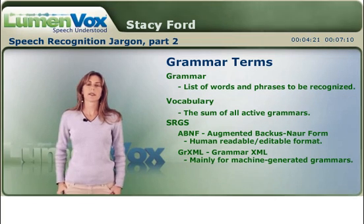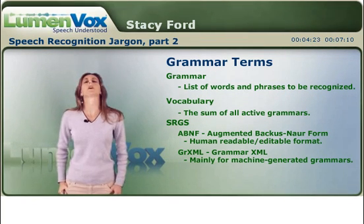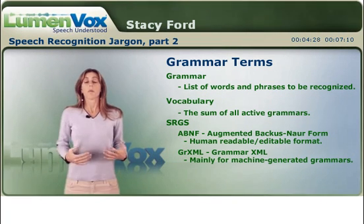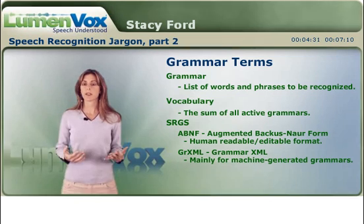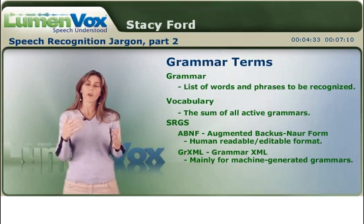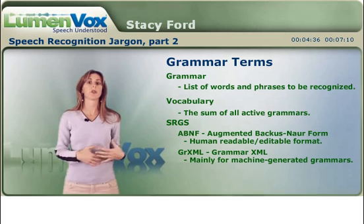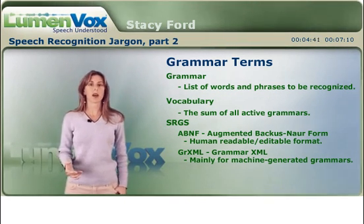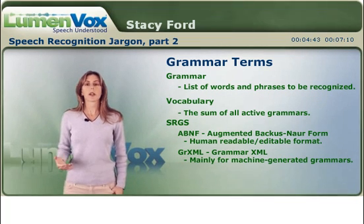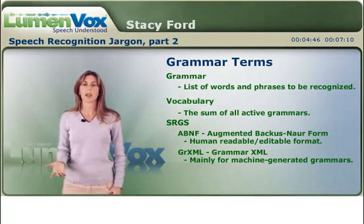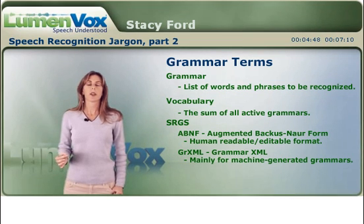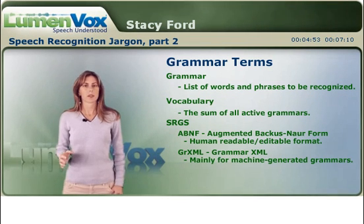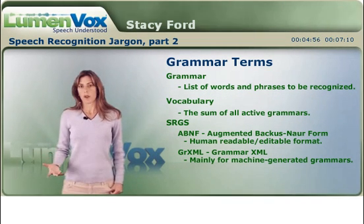ABNF stands for Augmented Backus-Naur Form. This is most commonly used when a grammar is written by a person. It's very easy to read and pretty easy to write, so if you need to edit the grammar it can be picked up relatively easily. The other format is GRXML, Grammar XML, which has all the same functionality as ABNF but is very commonly used for machine generated grammars. It may not be as easy to read, but it has all the same functionality.